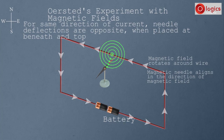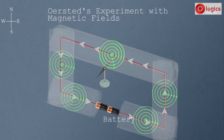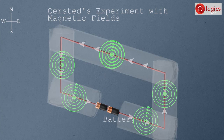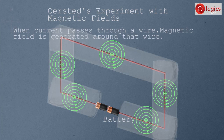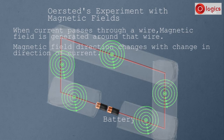In reality, the magnetic field is invisible and it is spread throughout around the wire. This is Oersted's experiment with magnetic fields. The conclusions are: when current passes through a wire, a magnetic field is generated around that wire, and this magnetic field's direction changes with the change in direction of current. However, this experiment did not clearly define a specific notation for current and field directions.